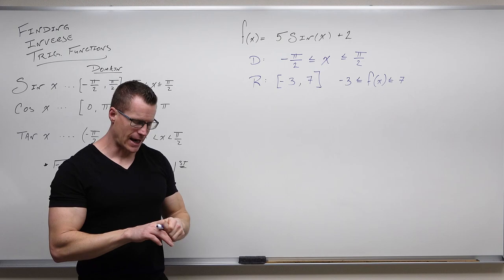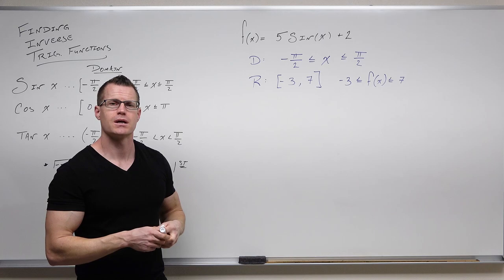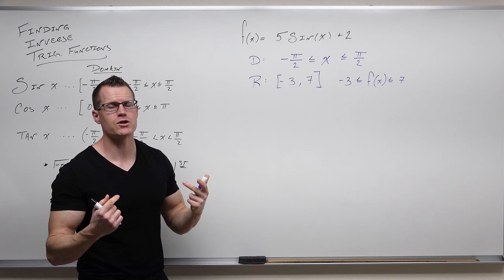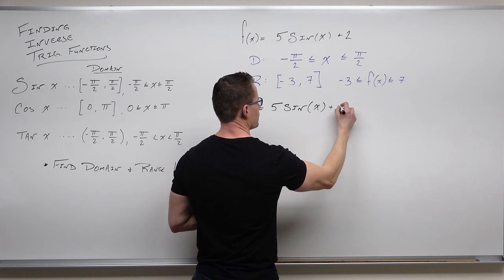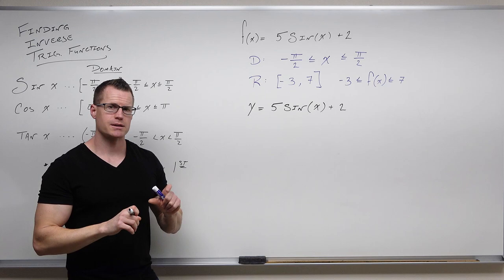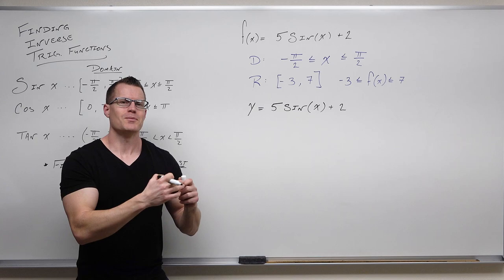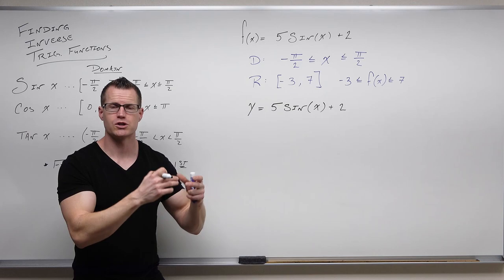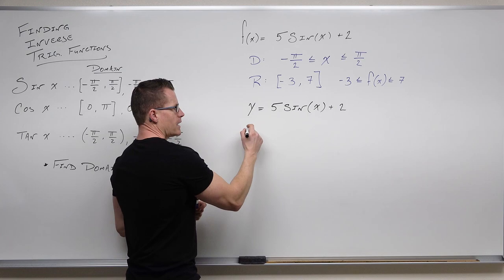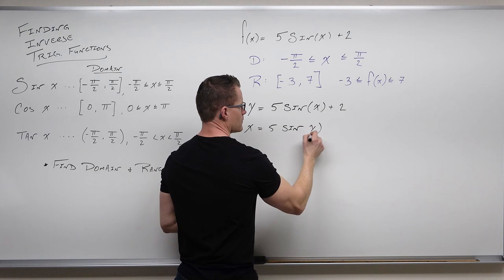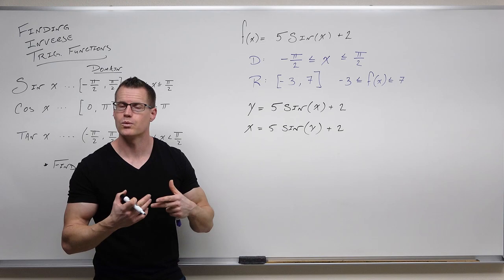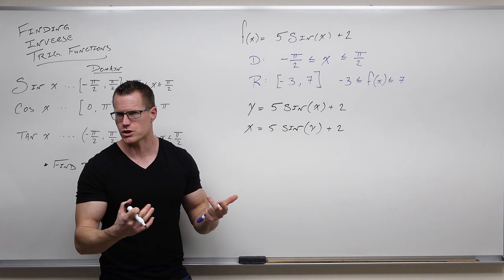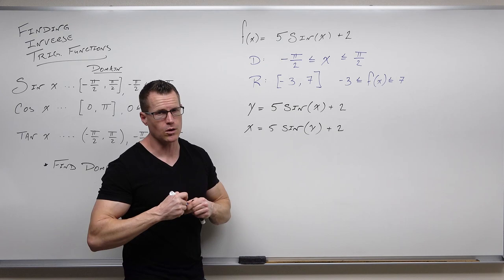To find the inverse, the first step is to replace f of x with y. After that, we change our y into an x and our x's into y's, and then we solve for y. By doing that, it's actually operation for operation undoing whatever you have — you have to undo the plus 2, undo the times 5, and undo the function sine with its inverse. Inverses undo functions, term for term, operation for operation, function for function.